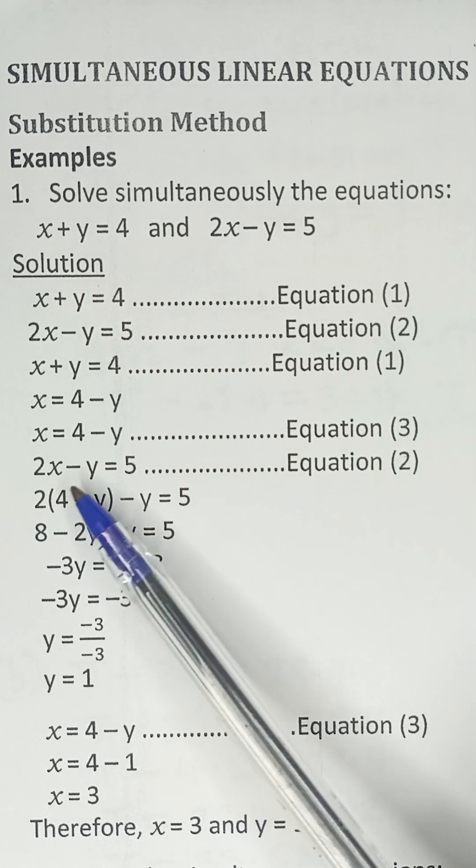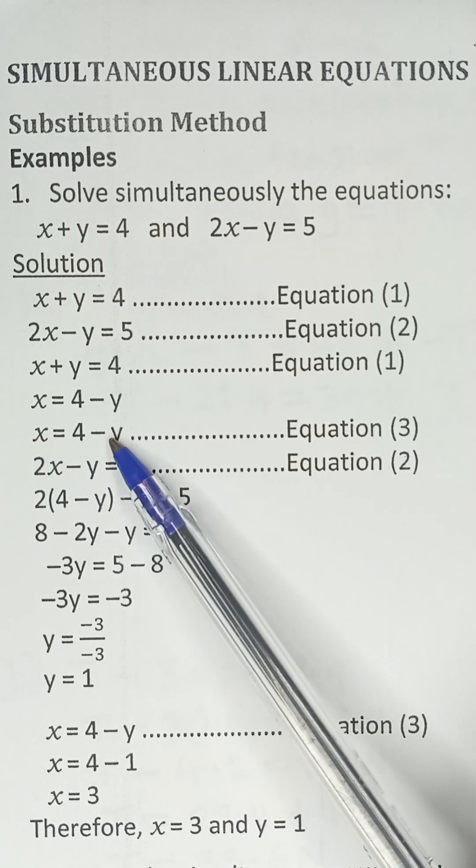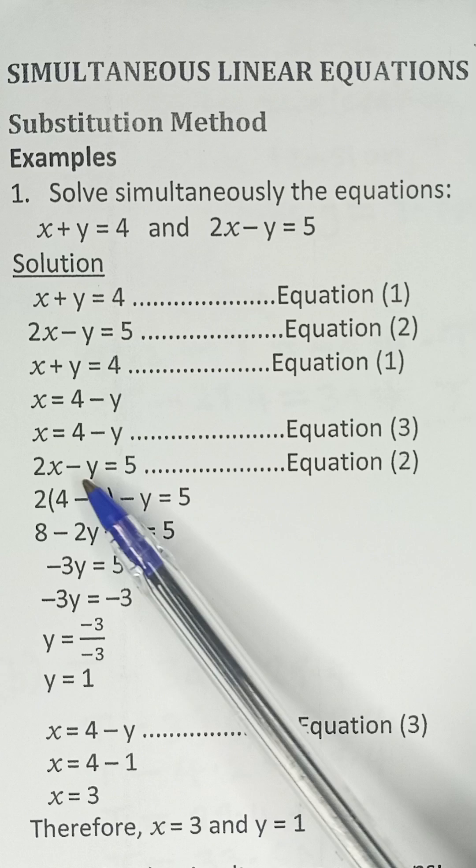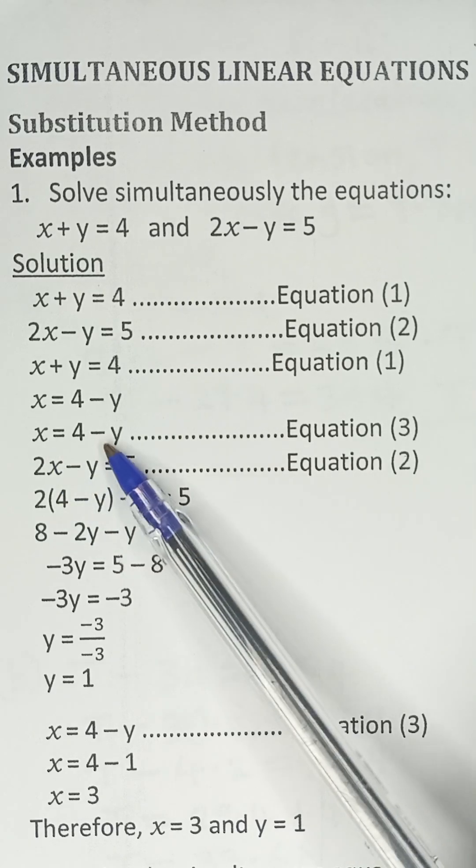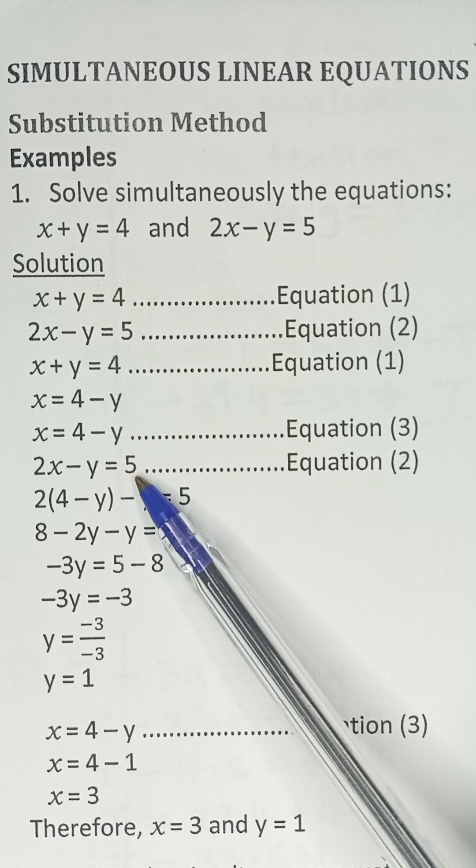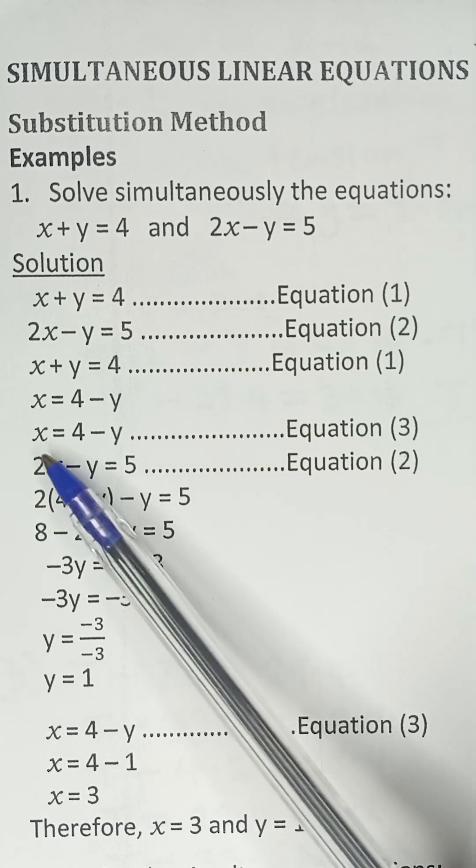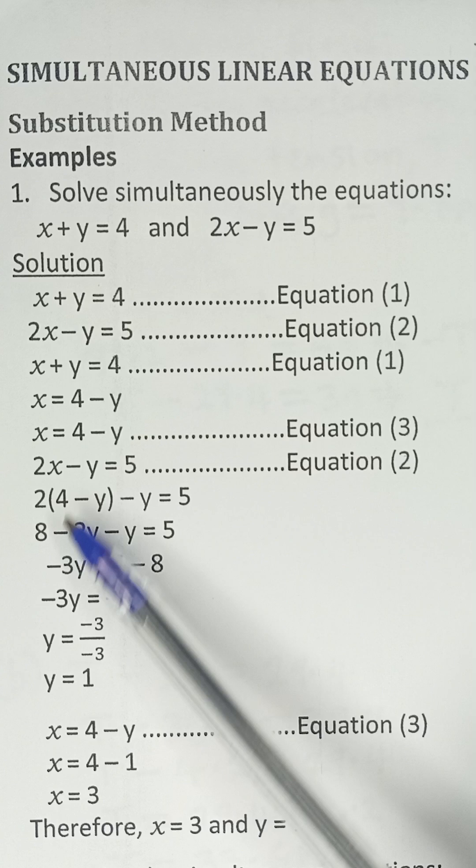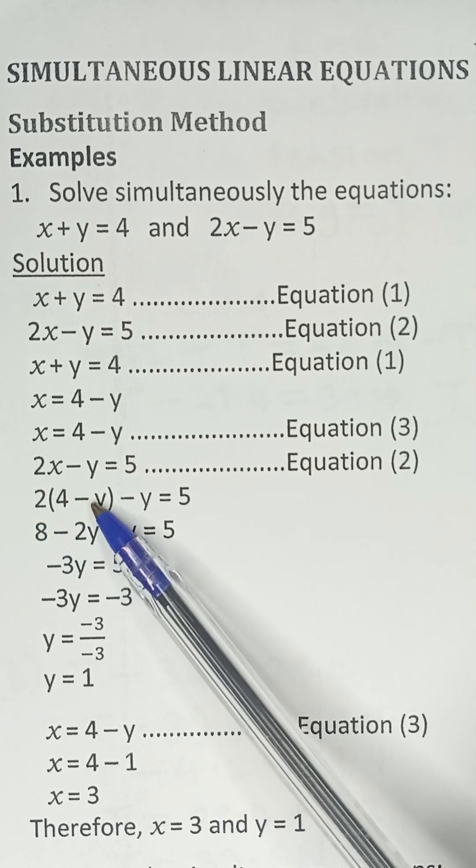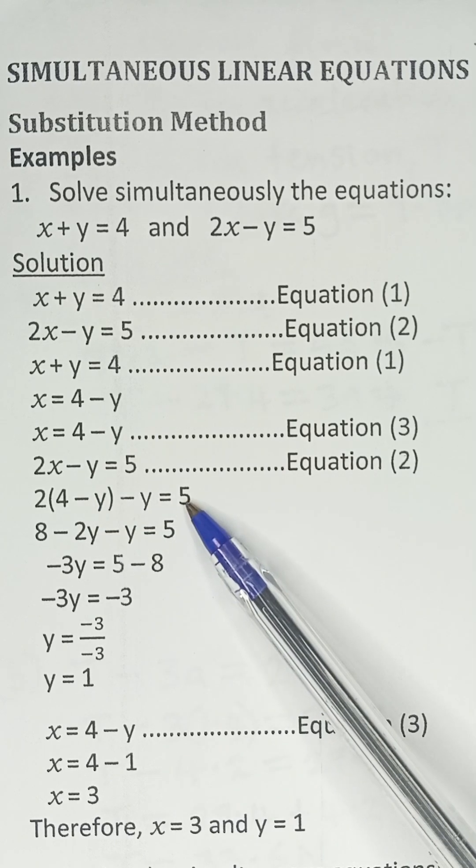Now we go to equation 2. Anywhere we see x, we are going to put 4 minus y. So equation 2 is 2x minus y equals 5. We are substituting 4 minus y for x. So 2x becomes 2 times (4 minus y), minus y, equals 5.